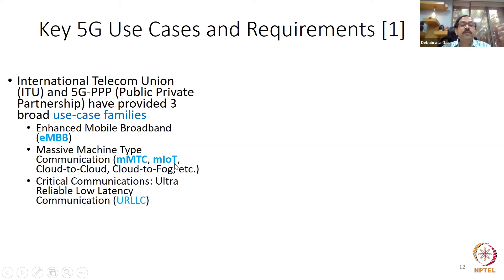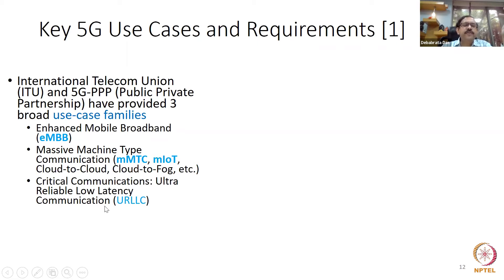Third, URLLC — Ultra Reliable Low Latency Communication — like the driverless car example: the car takes a photograph, sends it to the server, and the server decides whether to brake or accelerate. Ultra reliable means not a single bit can be missed. Very low latency means one to five milliseconds. A lot of research and jobs are now in URLLC, mMTC, and eMBB.